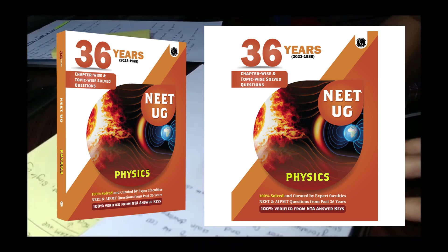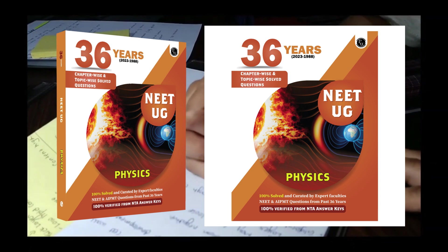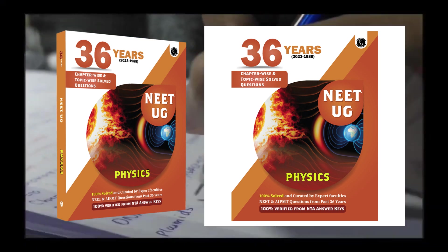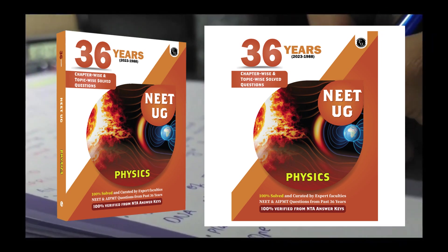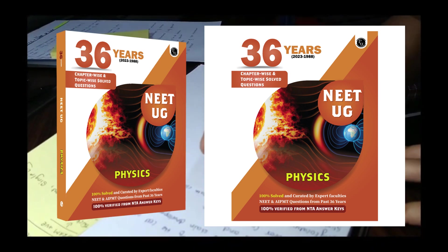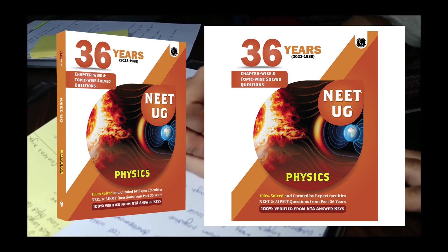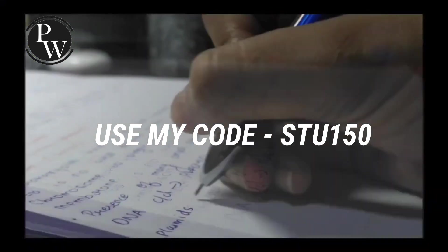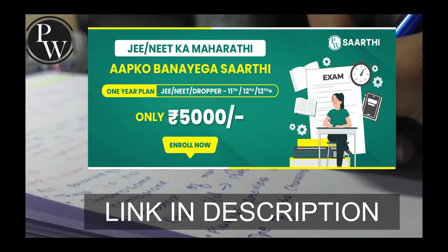NEET 36 year books are also available for all PCB students. In these books you'll get chapter-wise and topic-wise solved PYQs, 100% questions solved and curated by expert faculties. All NEET and AIPMT questions covered from past 36 years, and 100% solutions verified from NTA answer keys. The price of this book is just 500 rupees, so grab this offer now. You can use my code to get 150 rupees instant discount. All the links and details are given below in the description box.